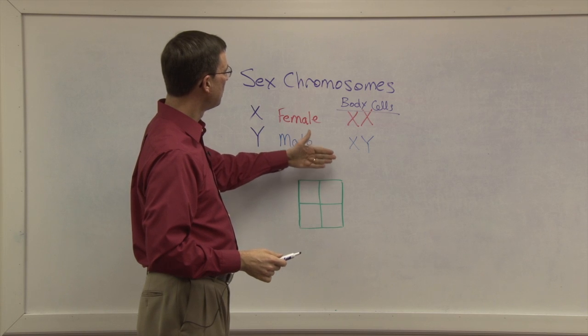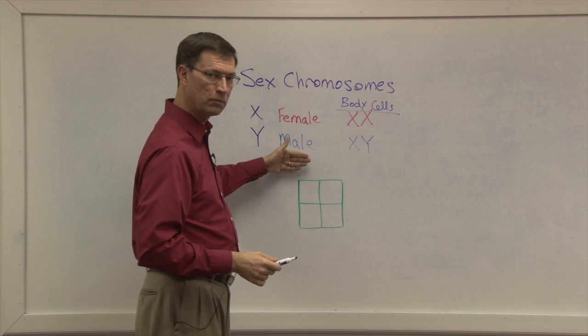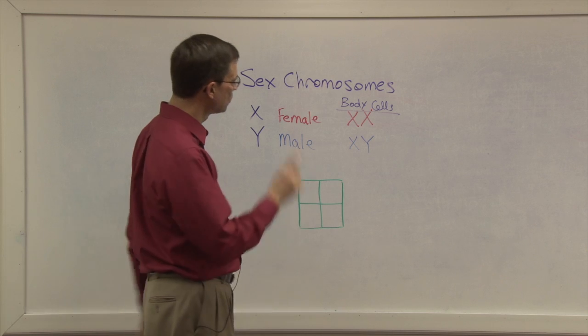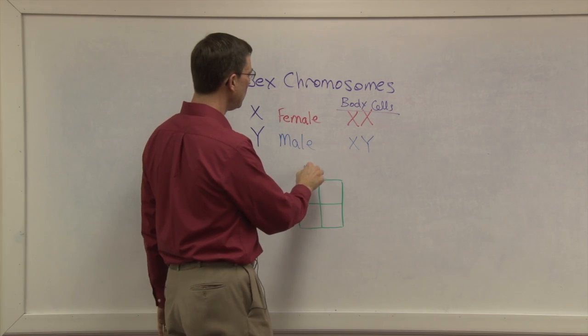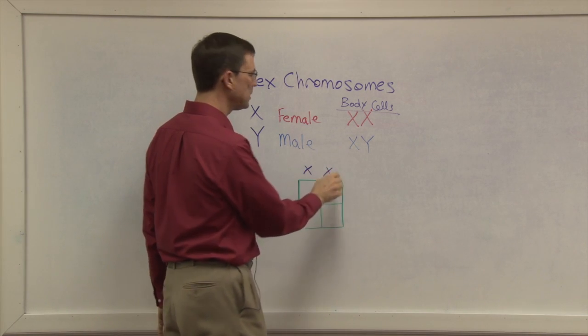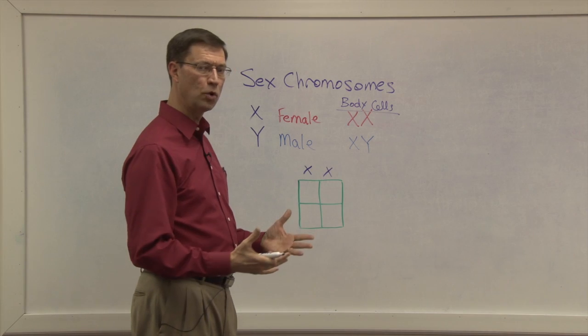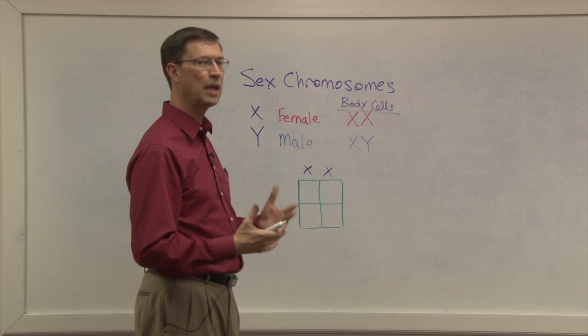Now let's talk about an illustration using the Punnett square. Let's cross the mom's gametes, which would be the ovum, with the dad's gametes, which would be the sperm. Mom can only have XX cells, so when her body produces ovum, every single ovum will have exactly the same thing, Xs.